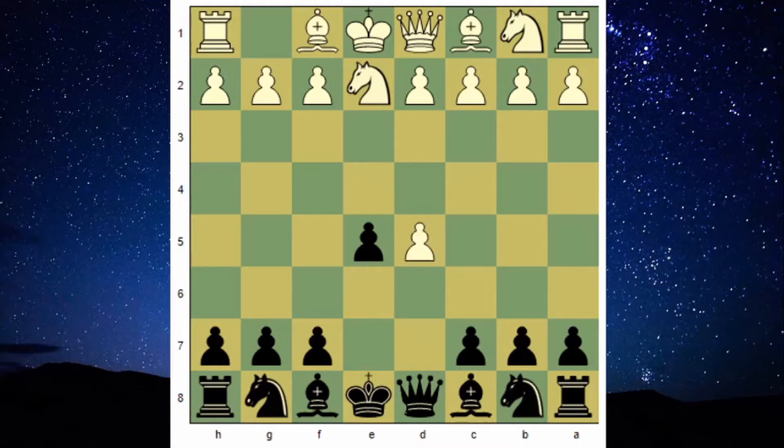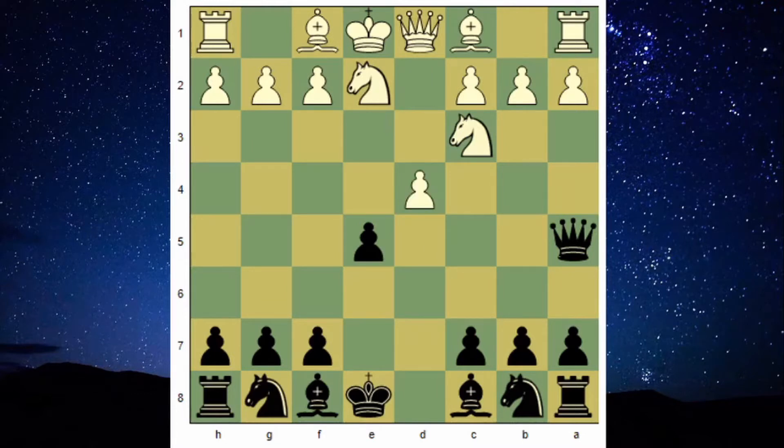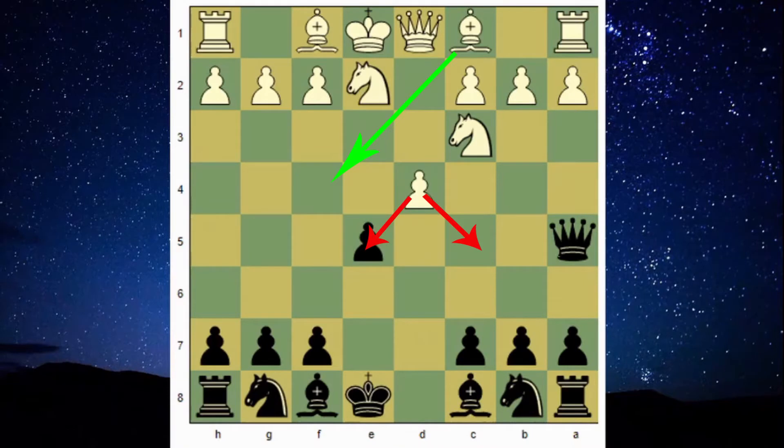Then queen takes d5, knight to c3 attacking the queen, queen to e5 controlling the kingside diagonal. Here most likely played move for white is d4 which will free up the bishop path, cover the center and attack the e5 pawn. Even if e takes d4, then knight takes d4 will free up the light square bishop.